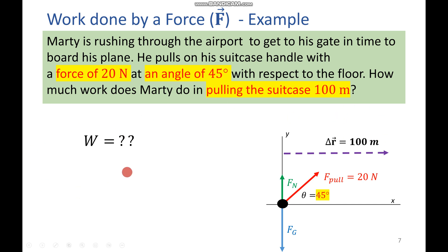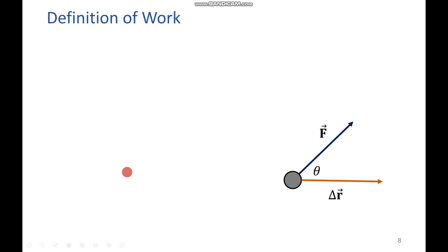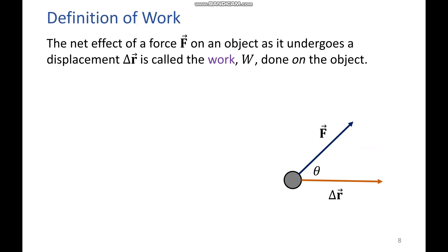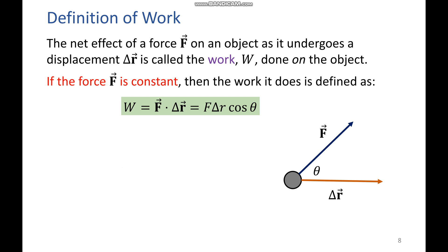So we're looking for work. How do we do that? To tackle this, we first need to define it. The net force of an object as it undergoes displacement, as I just said, delta R is called work W done on the object.